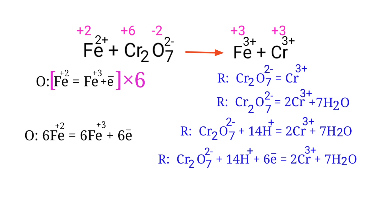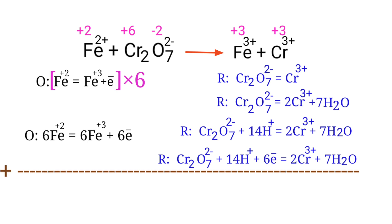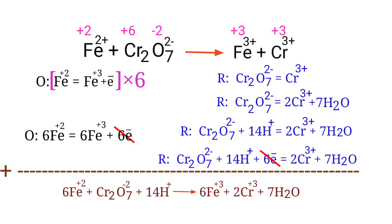Now we add both half-reactions together and cancel the same terms that appear on both sides. The equation is now fully balanced in an acidic medium.